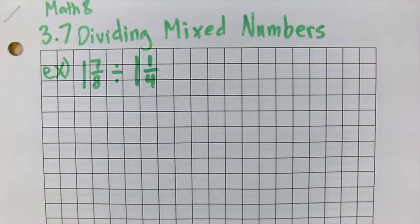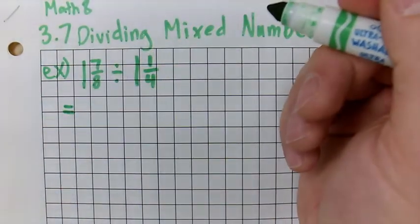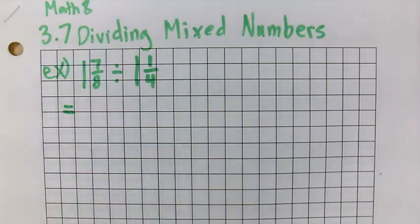Well, the simplest way for me to do it is to switch these to improper fractions and then just use either method 1 or method 2 that we learned last time. So either the common denominator or the multiplying by the reciprocal.